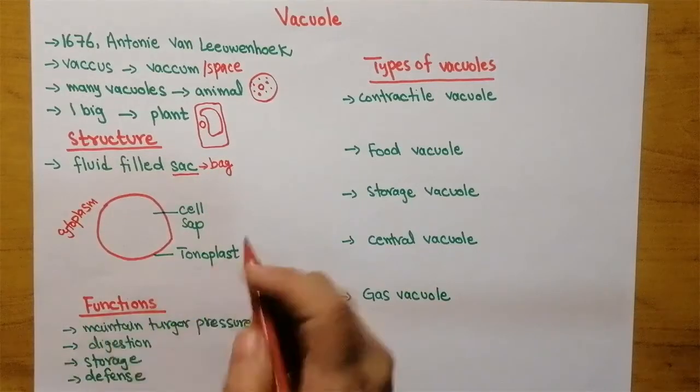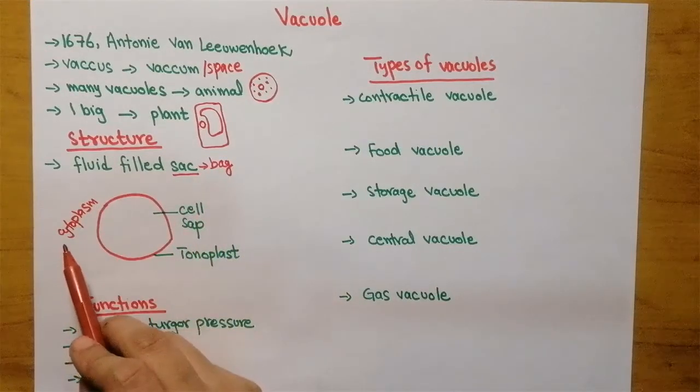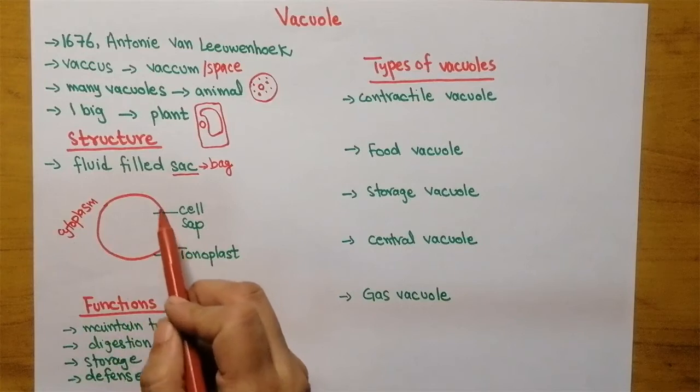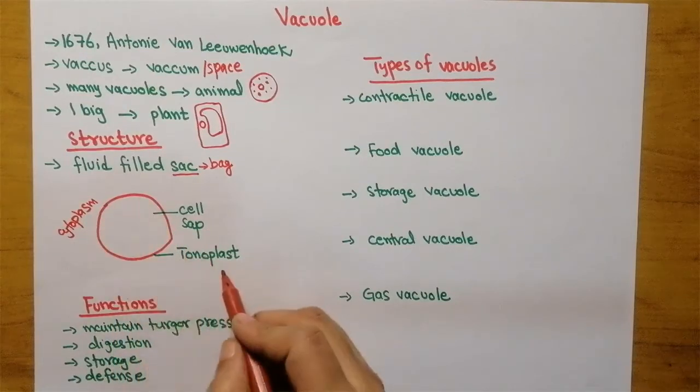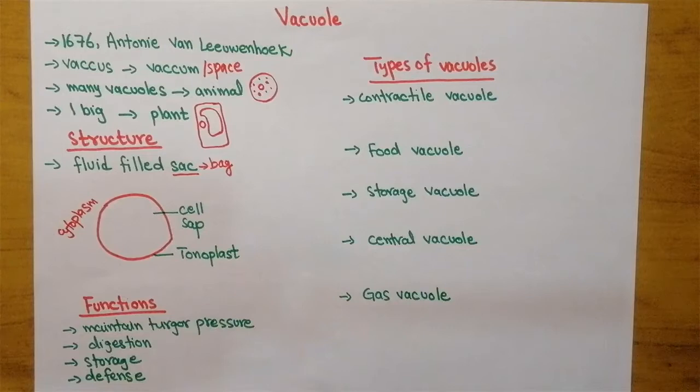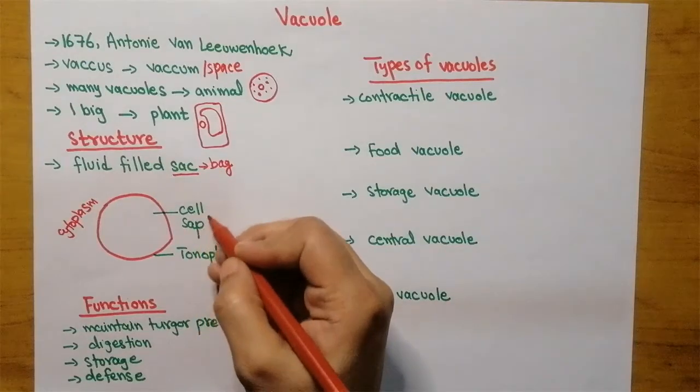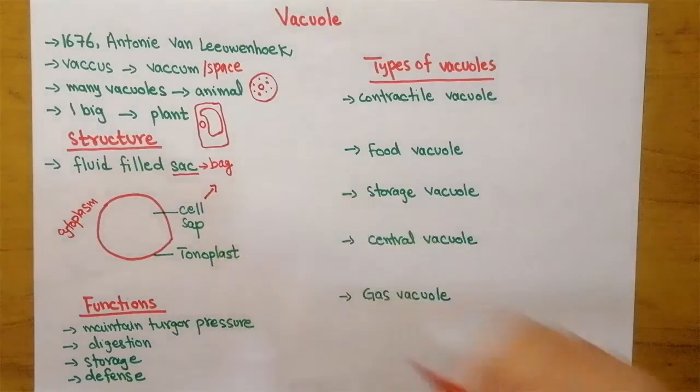The cell sap is separated from the cytoplasm by a membrane. This membrane is tonoplast. If somebody asks you what is the name of the membrane surrounding the cell sap or the membrane of vacuole, you can tell them that it is tonoplast.